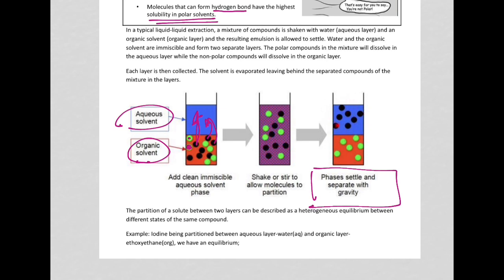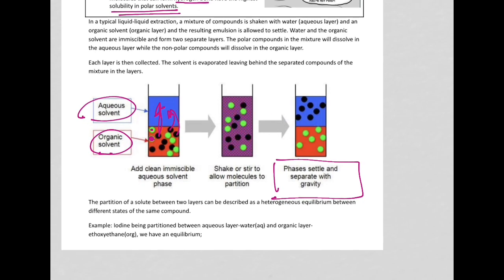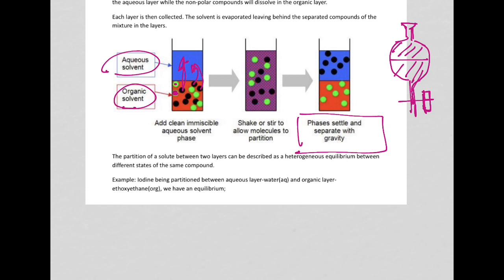Then you can collect each layer. So the top layer can be collected, the bottom layer can be collected. If you remember, we have an equipment which is called a separating funnel. So you have a tap. Normally, this separating funnel is used to do this technique. You can have both layers. They are allowed to settle down. And then once they separate, you open the tap. You collect each layer separately. And this is a heterogeneous equilibrium because they do not mix.